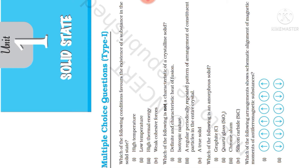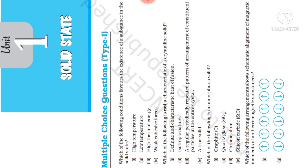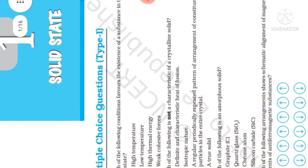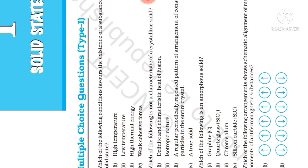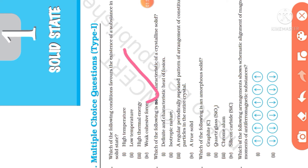Next question: which of the following is NOT a characteristic of crystalline solid? Crystalline solids have a regular geometrical arrangement in 3D dimensions, a definite arrangement of particles, and a definite heat of fusion. However, isotropic nature is listed as a characteristic — but this is actually wrong for crystalline solids.